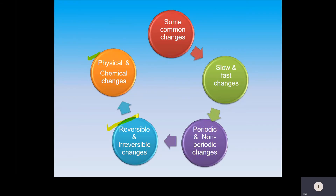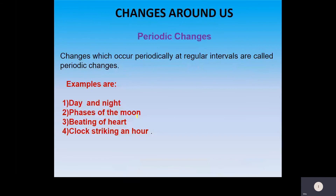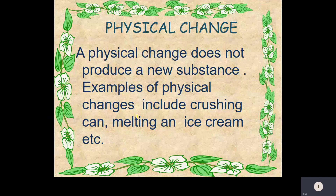First of all, we will understand about the third kind of change, that is physical and chemical changes. What do we mean by physical changes? As the name indicates, it is a change in the physical properties. The physical properties of materials are the properties related to shape, size, form, texture, and color of the object. So now we need to understand about physical change.